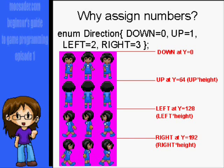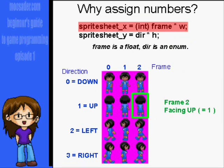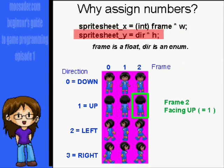When we go to display the sprite, it will look like this. Here, we're multiplying the current frame by the width of the player to get the x coordinate on the sprite sheet. Similarly, we're using the current direction, multiplied by the height, to get the y coordinate on the sprite sheet.